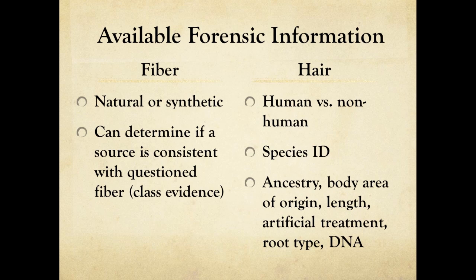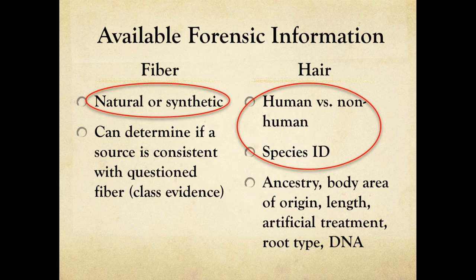With hair evidence, the first thing a forensic scientist will determine is whether or not the hair is human. If it is not human, the hair's cuticle pattern can be used to identify the species. If the hair does belong to a human, you can assess ancestry, where the hair came from on the body, the length of the person's hair, and whether or not it was treated with hair dye. If the root is present, you can determine if the hair was naturally shed or forcibly removed, and perform a DNA analysis. But today we'll focus only on basic microscopic analysis: natural versus synthetic fiber, human versus non-human hair, and species identification.